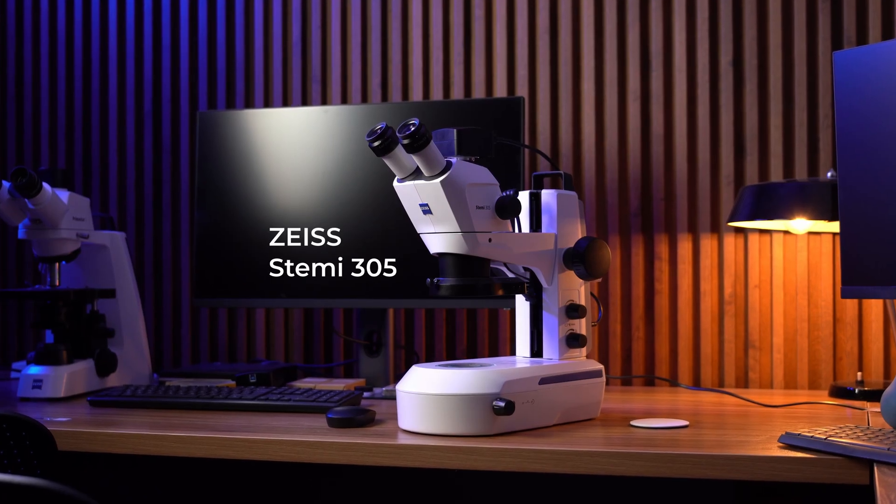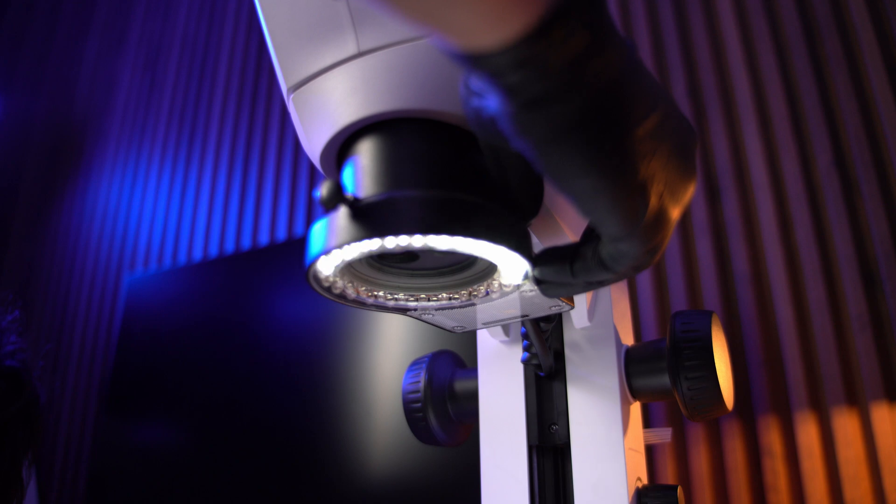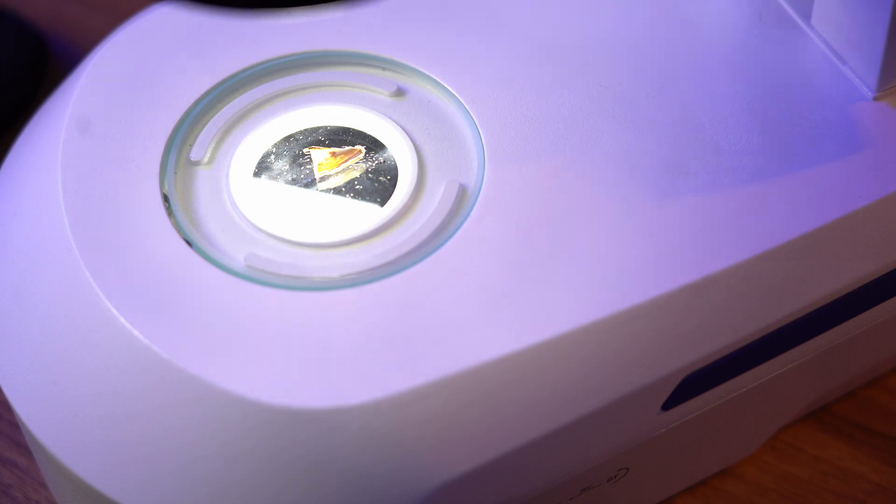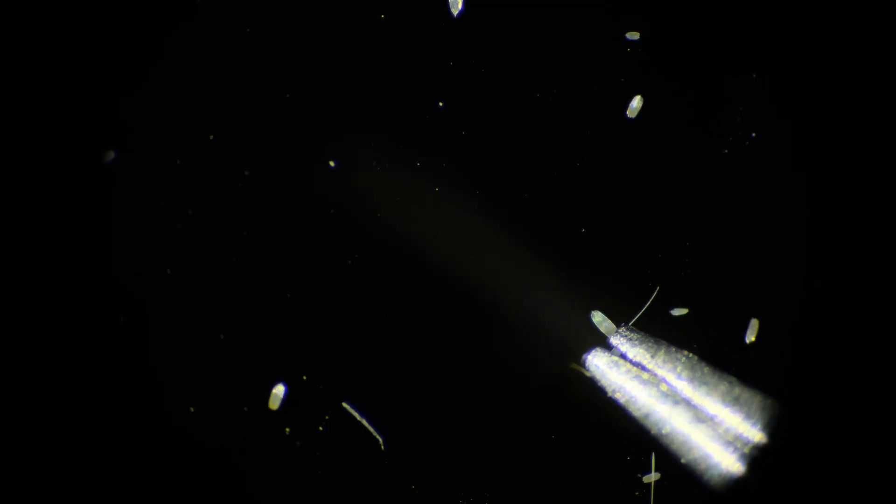I'm using a Zeiss STEMI 305 microscope with both reflected and transmitted light. That lighting setup lets me see the butterfly wing in a bunch of different ways. The transmitted light can be adjusted so I can switch between bright field and dark field illumination.